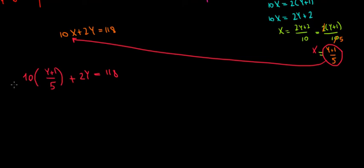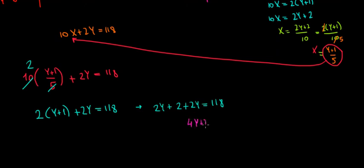10 divided by 5 is just 2. So 2. And we have 2 times y plus 1 plus 2y is equal to 118. If we open the brackets, we have 2y plus 2 plus another 2y is equal to 118. 2y plus 2y, that's 4y. So 4y plus 2 is equal to 118. 4y is equal to 116.